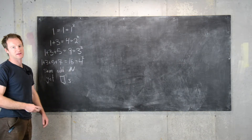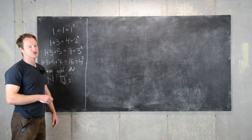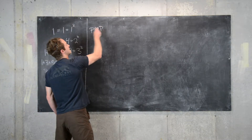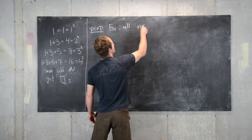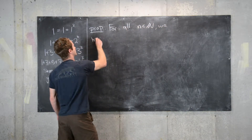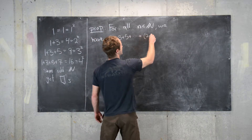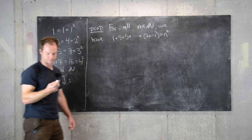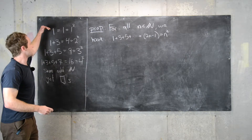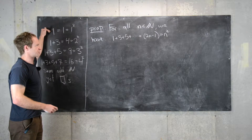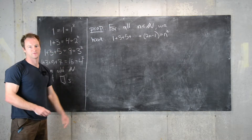From this observation we want to prove a statement using the principle of mathematical induction. Generalizing it, we get the following proposition: for all natural numbers n, we have 1 plus 3 plus 5 plus dot dot dot plus (2n minus 1) equals n squared. Notice that plugging in n equals 1 gives just 1, and plugging in n equals 2 gives 1 plus 3 which is 4, and so on.